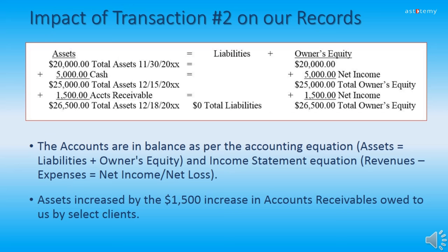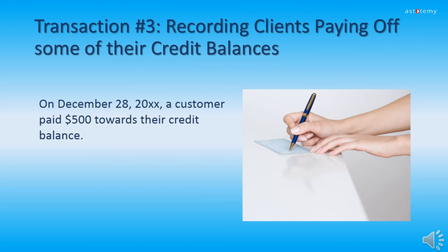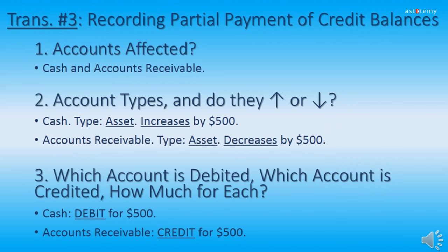Now we're ready for Transaction 3 — recording clients paying off some of their credit balances. On December 28, 20XX, a customer paid $500 toward their credit balance. The two accounts affected are Cash and Accounts Receivable. Cash is an asset type and it will increase by $500. Accounts Receivable is also an asset type and it will decrease by $500. Remember, when you have two of the same type of account, one will increase and one will decrease.